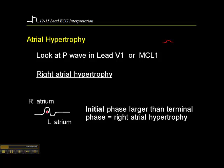When you see a biphasic P wave in V1 or MCL1, if the initial phase of the P wave is larger than the terminal phase, then you have a patient who has right atrial hypertrophy.